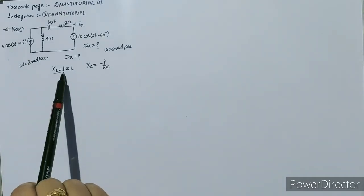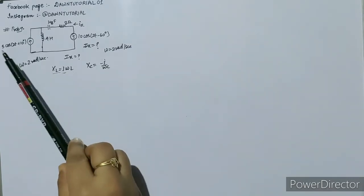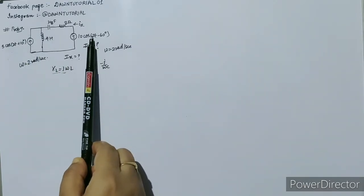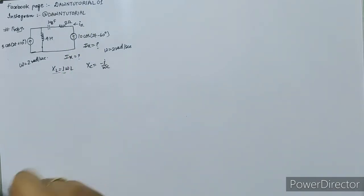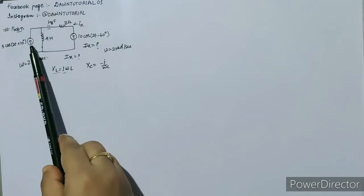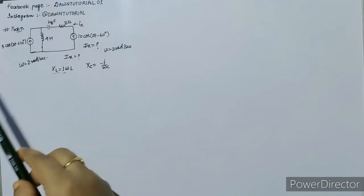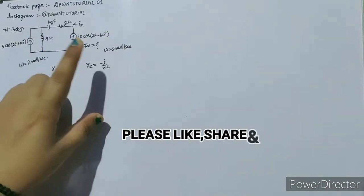If omega value is different, then the value of XL will be different. If omega is 2, then XL will have some value. If omega is 5, then XL will have a different value. That's why we applied superposition theorem when frequency is different in the sources.